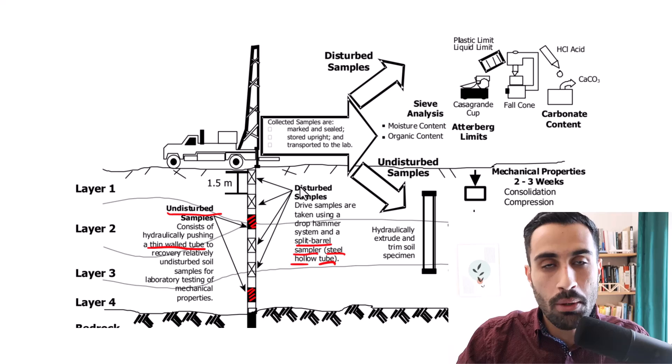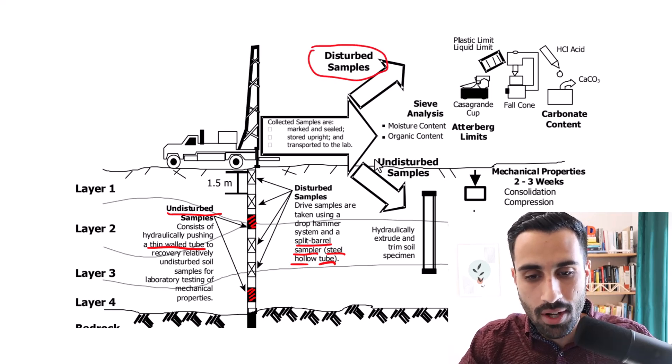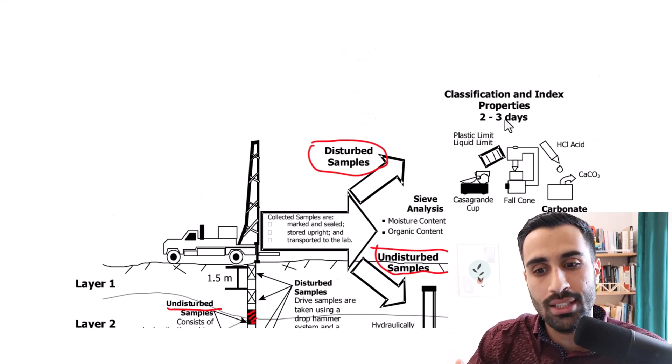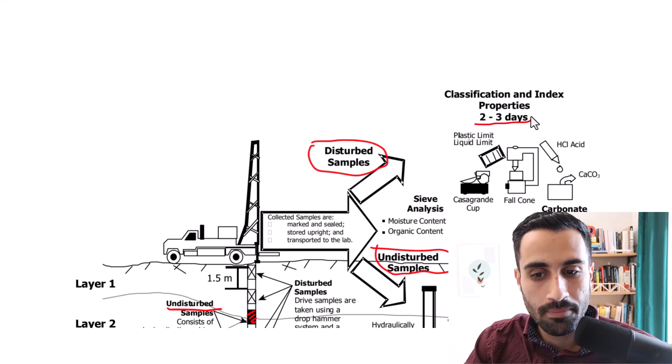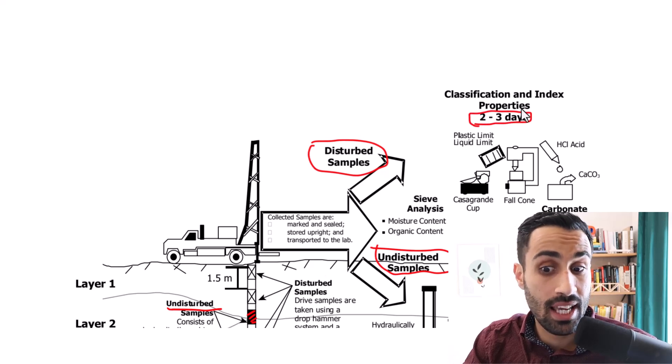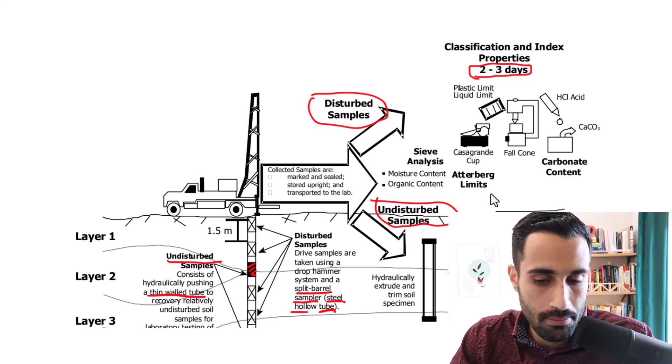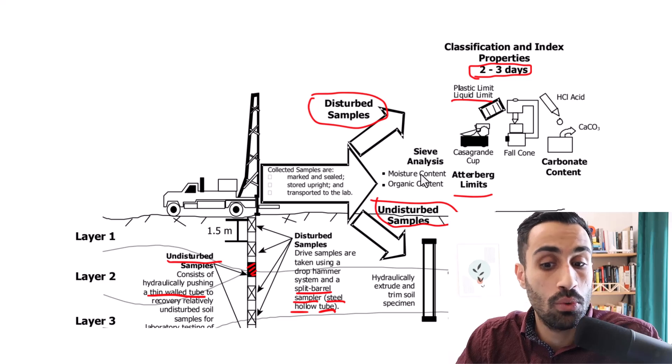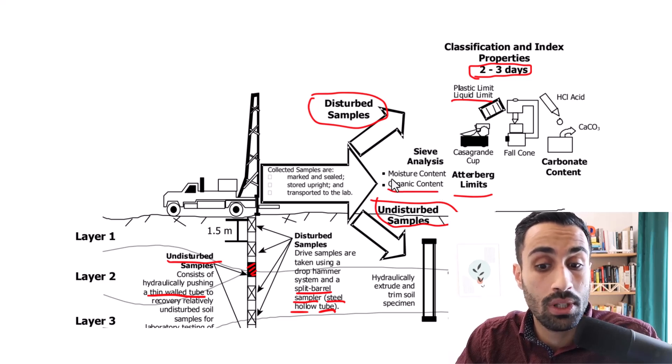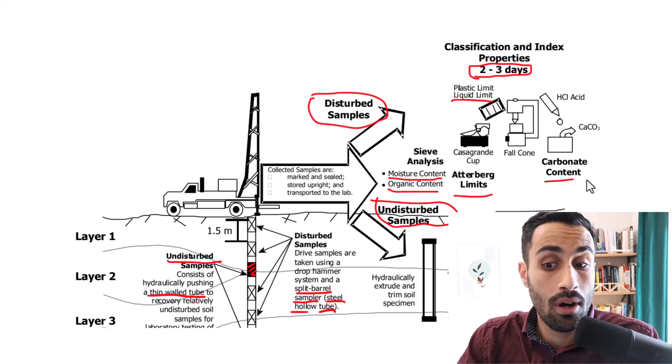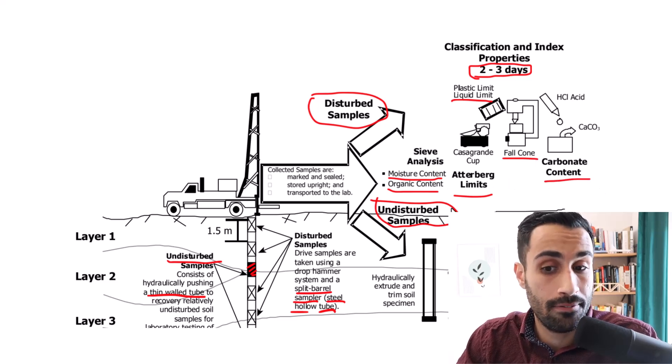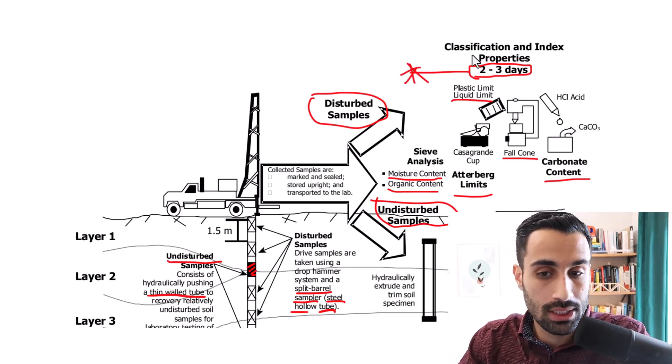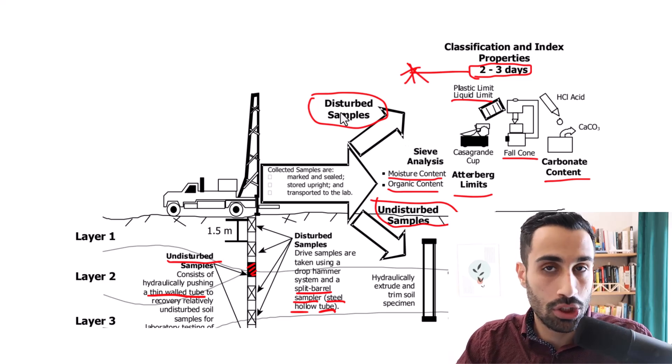Then after that we proceed. We have disturbed samples, we have undisturbed samples. The ones that come first, let's say two to three days after we get the samples, is going to be the classification and index properties. So we can do the Atterberg limits, liquid limit, plastic limit. We can do sieve analysis. We can do the moisture content, get that water content. We can get the organic content. We can do a carbonate content or a fall cone test if needed. So that comes first. That will always come first two to three days after: classification, index properties, disturbed samples.